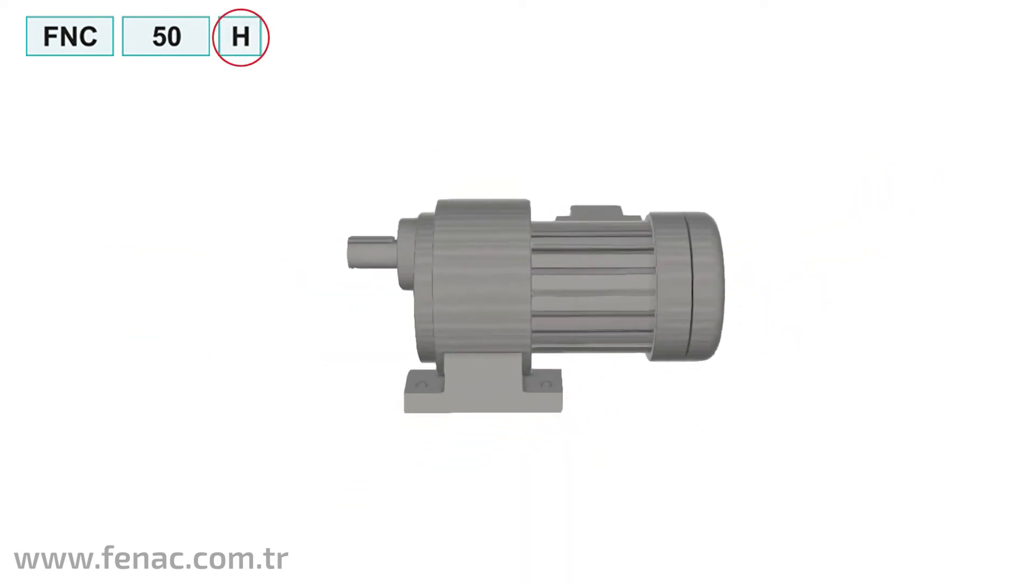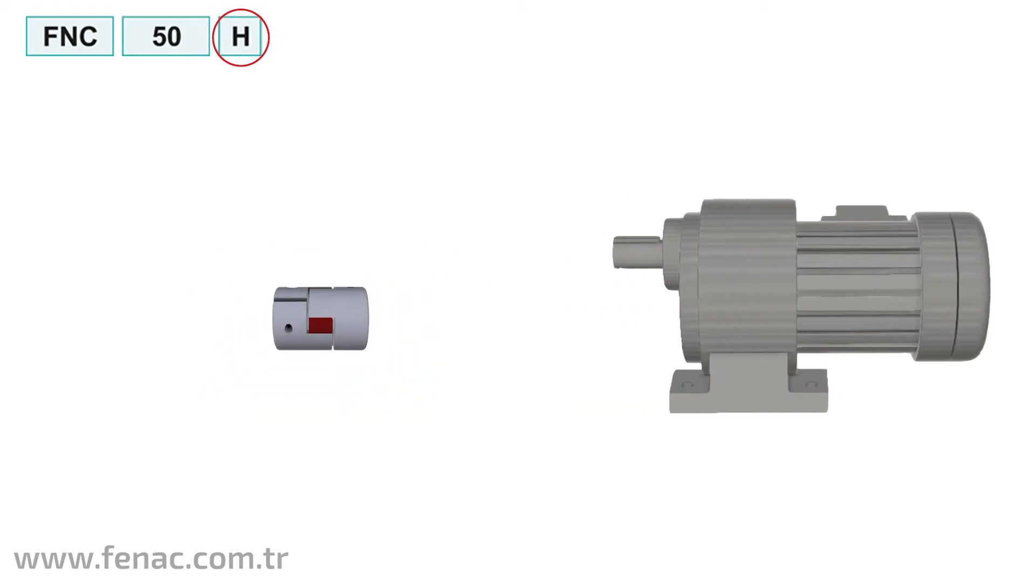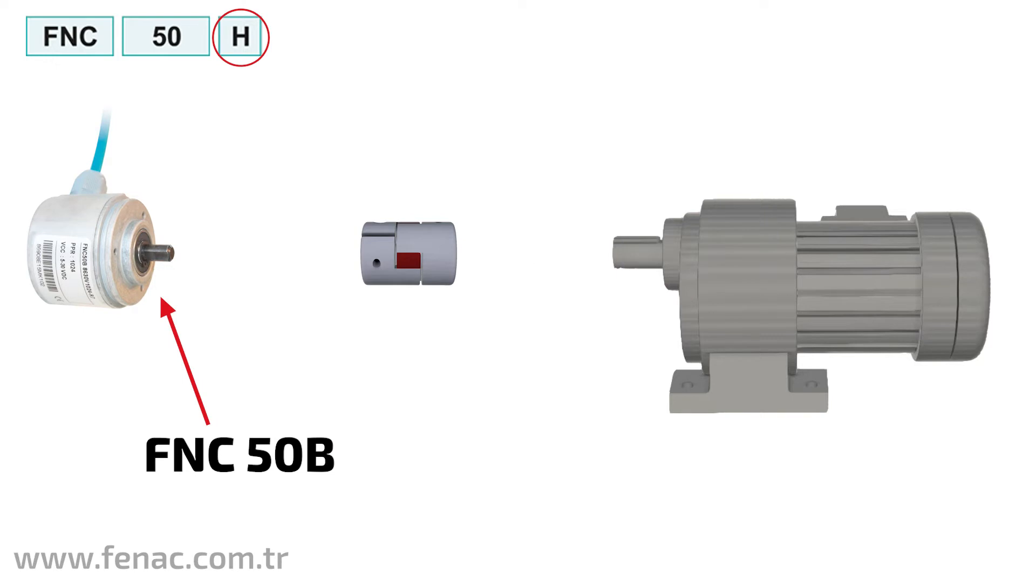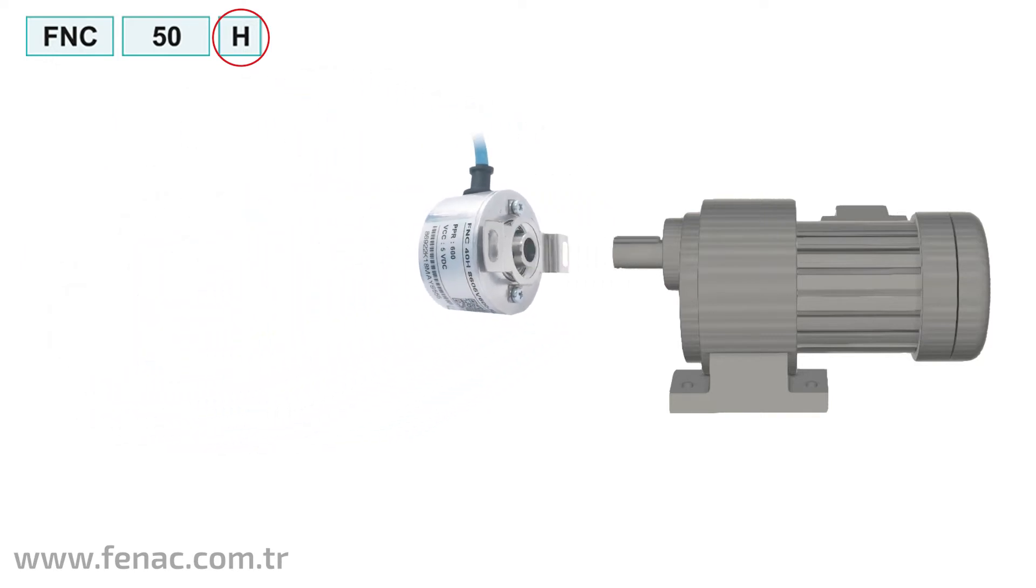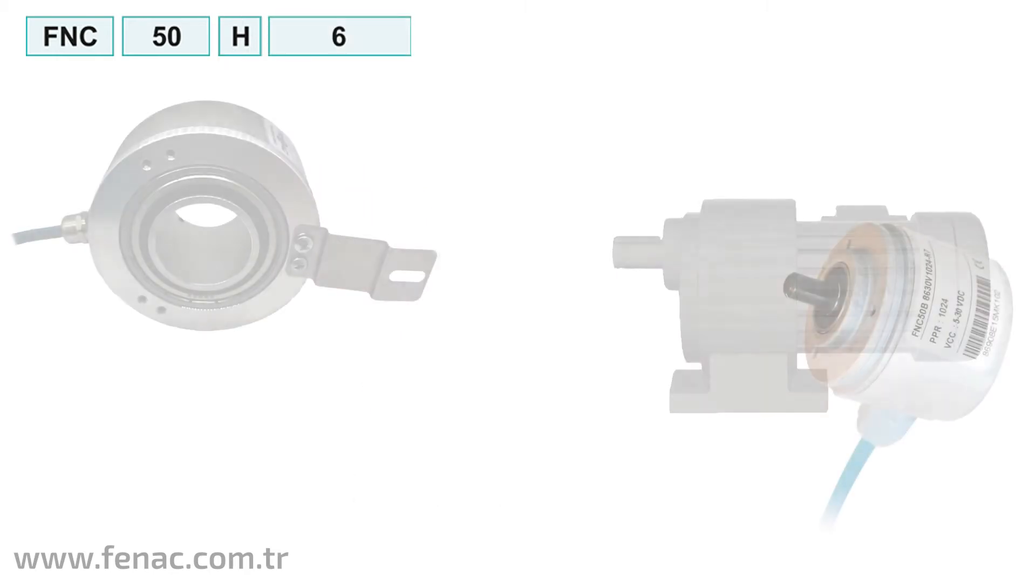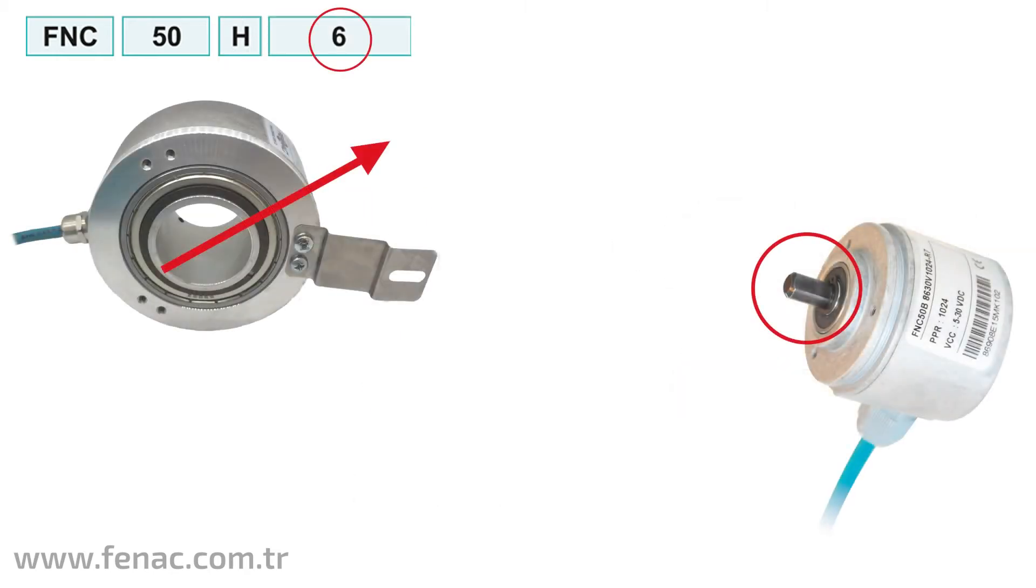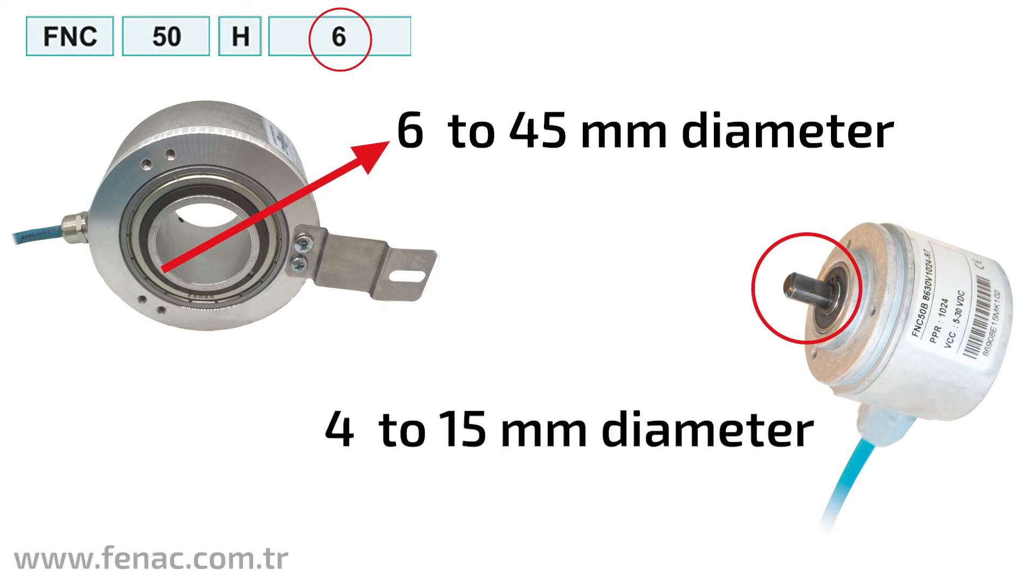Whether the encoder will be with a coupling or directly attached to the motor shaft must be specified. Clamping flange and servo flange encoders will attach to the motor shaft with a coupling. End hollow shaft and through hollow shaft encoders will be attached to the motor shaft directly. The diameter of the encoder shaft must be specified.